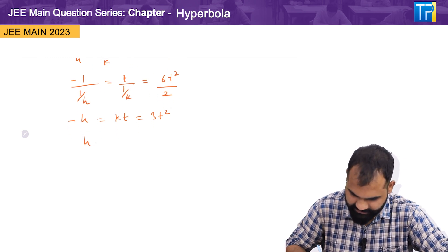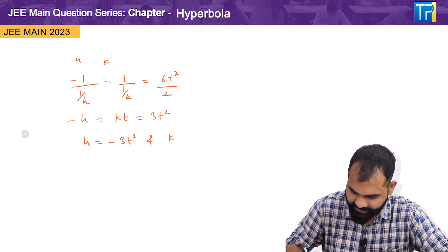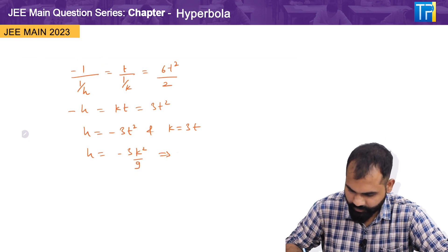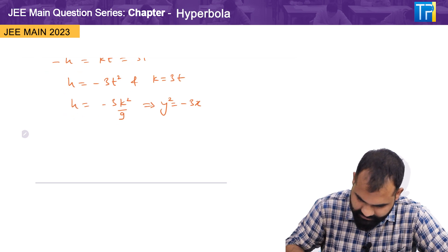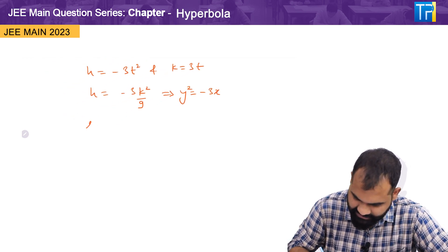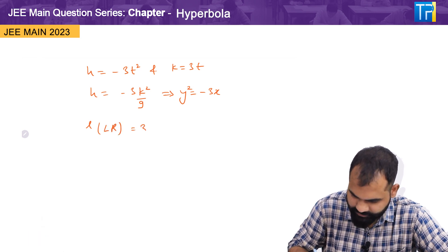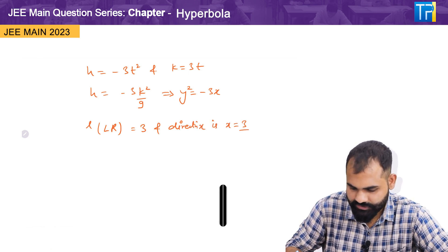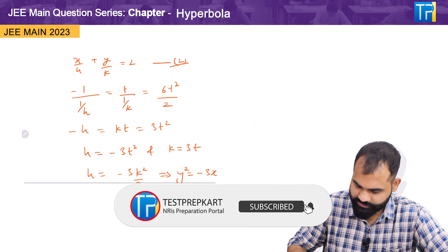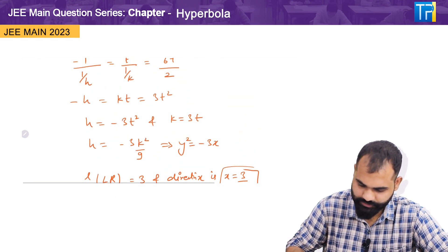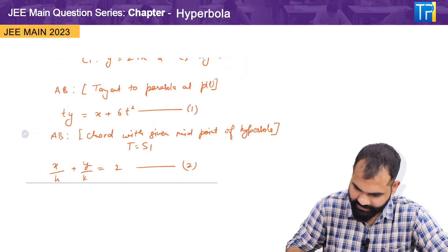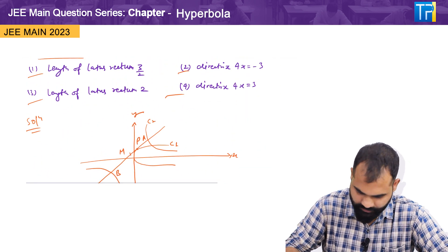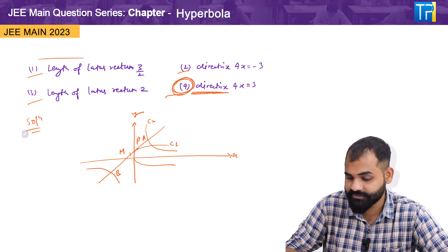Solving further, h = -3t² and k = 3t. Substituting, h = -3k²/9, which simplifies to -k²/3 = h, giving y² = -3x. The latus rectum length is 3 and the directrix is x = 3/4, or equivalently 4x = 3. So option four is correct: the directrix is 4x = 3. Thank you.